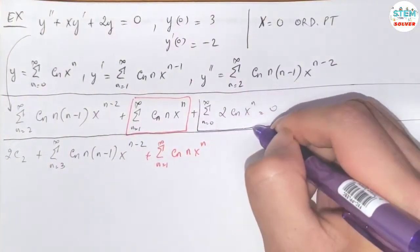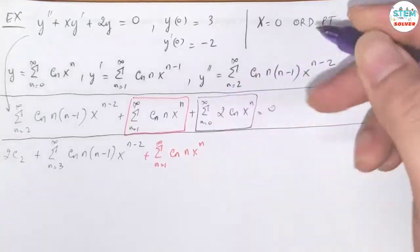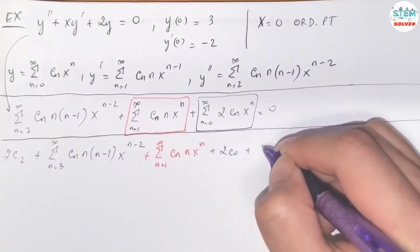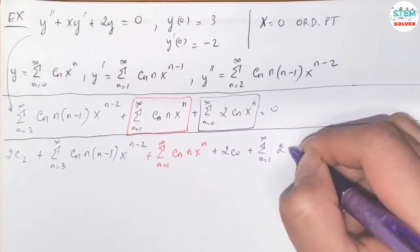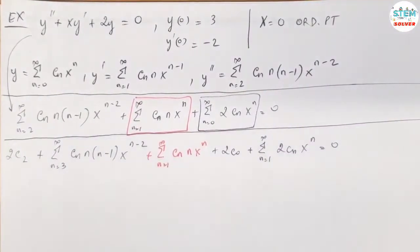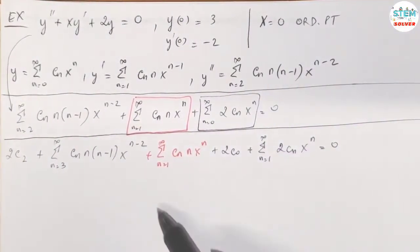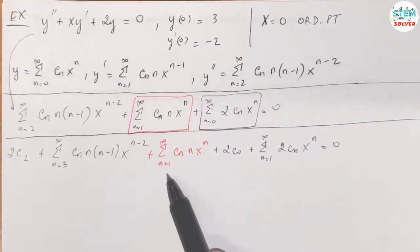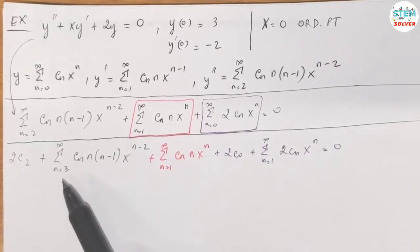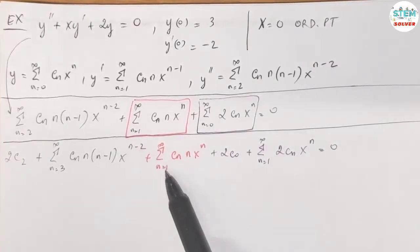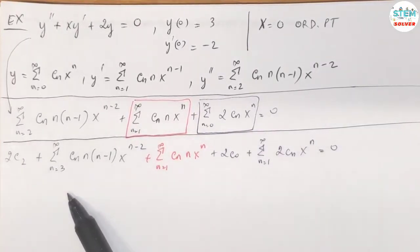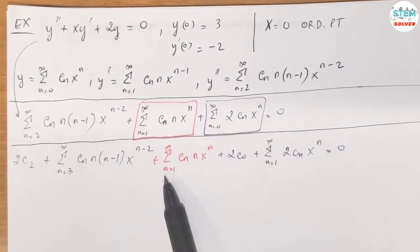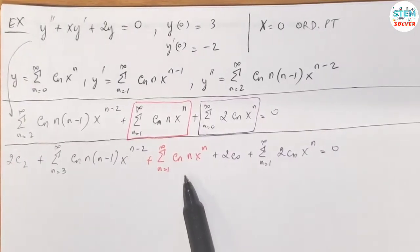For the third series, plugging in n=0 gives 2c_0, plus the power series from 1 to infinity: 2c_n x to the n, equals 0. Now we look at the indices. We have n starting at 3, n starting at 1, and n starting at 1. We should re-index the first series to start at 1, instead of re-indexing the other two series to start at 3, because re-indexing one power series is easier and faster than re-indexing two.